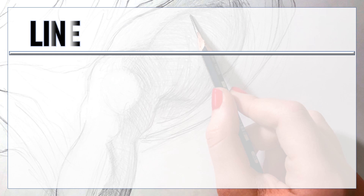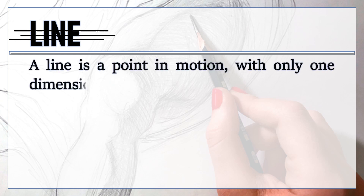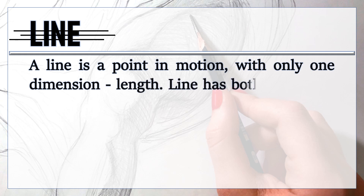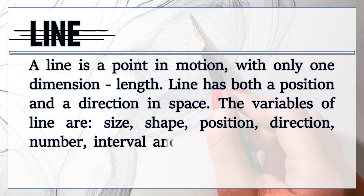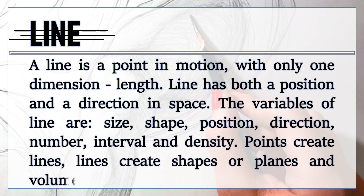The second element is the line. A line is a point in motion with only one dimension — length. Line has both a position and a direction in space. The variables of line are size, shape, position, direction, number, interval, and density. Points create lines; lines create shapes or planes and volume.